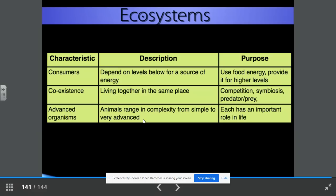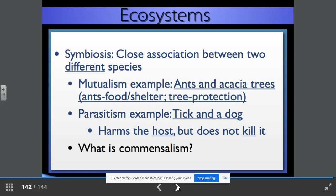Think advanced organisms. Animals range in complexity from simple to very advanced. Each organism has a role or a niche in life, has an important role in life. Symbiosis is a close association between two different species. Mutualism, for an example. This is ants and acacia trees. The ants get food and shelter. The tree gets protection.